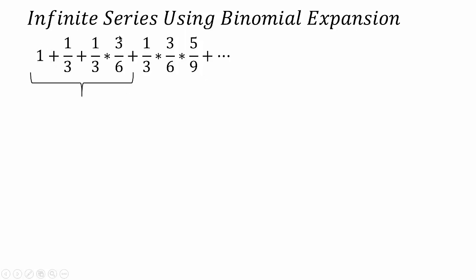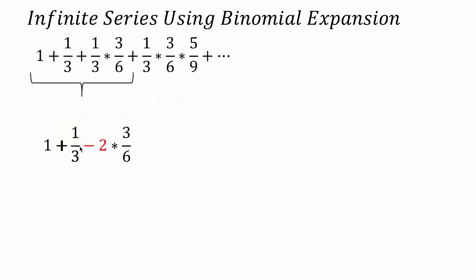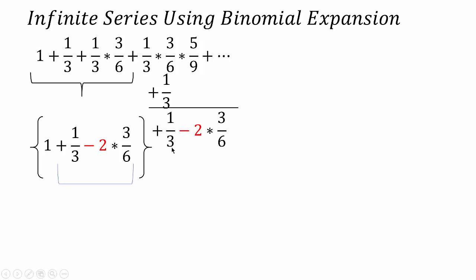Looking at the second term, which is 1 over 3, we notice it is repeating in the third term as well. We replace this repeating number with minus 2. Then we put the bracket, bringing the second term into the numerator of the power, and the remaining numbers excluding 1 go into the denominator part of the index — so 1 by 3 goes in the numerator and the rest goes in the denominator.